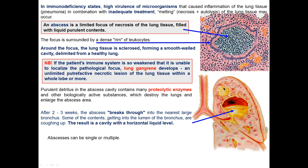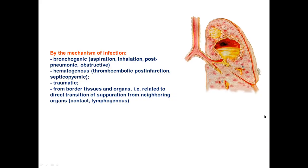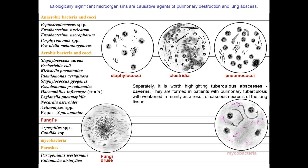You can see here multiple abscesses — one abscess before rupturing into the bronchus, and another abscess that has broken into the bronchus. Infection can reach the lung tissue by several mechanisms: first, the bronchogenic mechanism, which may occur during inspiration or inhalation; post-obstructive mechanisms; hematogenous spread by blood due to thromboembolism or septicemia; by contact from neighboring border tissue and organs; or lymphogenous mechanism.